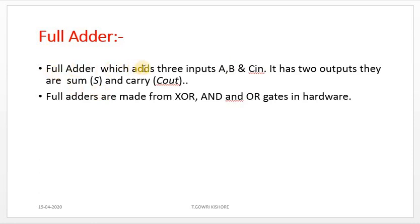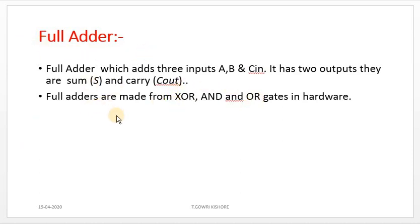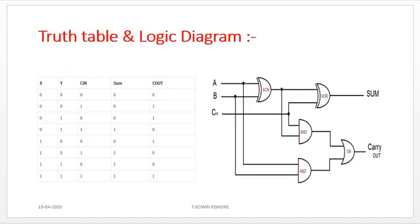The full-adder adds three inputs: A, B, and C-in. It has two outputs: sum and carry. Full-adders are made from XOR and OR gates in hardware. A full-adder can also be designed using two half-adders and one OR gate.